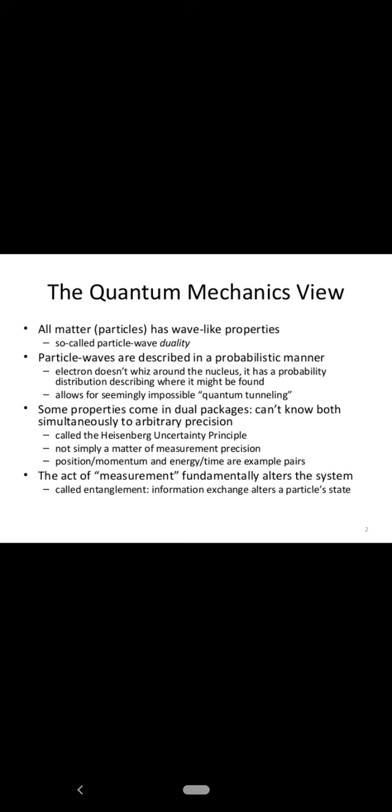Some properties come in dual packages and can't be known simultaneously to arbitrary precision. The third most important formulation on which quantum mechanics is based is the Heisenberg uncertainty principle, according to which there are certain properties which can't be determined simultaneously. These are like position and momentum, energy and time. We cannot determine the position and momentum of a particle simultaneously. If we know the position, then there will be some error or inaccuracy in determining the momentum of the particle.